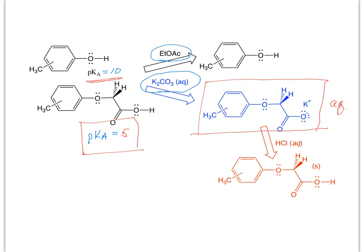Now we want to get our product back as a solid. If we add hydrochloric acid again, we can reprotonate the carboxylate salt — note the groups there. That precipitates as a solid, and then we can isolate our ether. By doing the melting point, we can determine whether it's ortho, meta, or para.